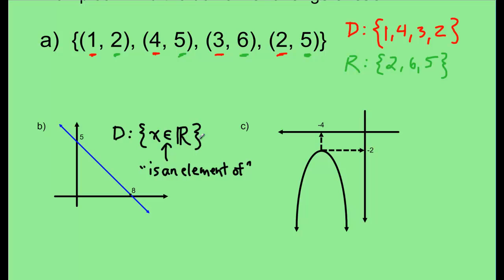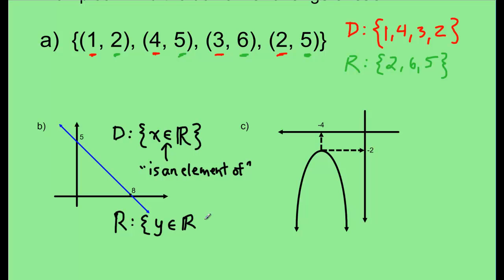What about the range for the line graph? Notice how this line goes on forever downwards and upwards, so any possible y value exists for this line too. My range is: {y ∈ ℝ} — any possible value between negative infinity and infinity exists for y. So domain is x ∈ ℝ and range is y ∈ ℝ.